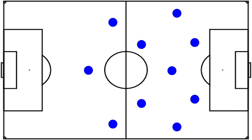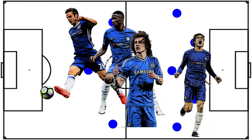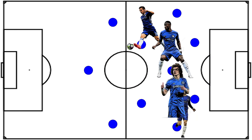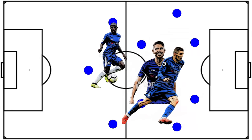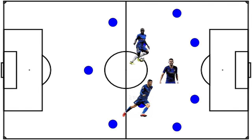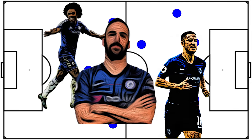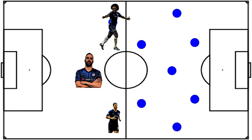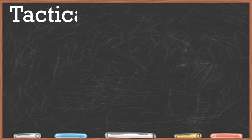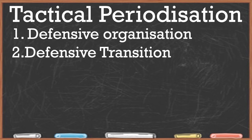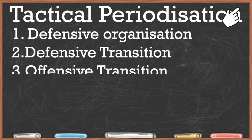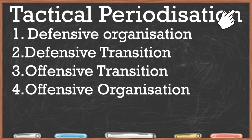Sarri stuck to his trusted 4-3-3. Azpilicueta, Rudiger, Luiz and Alonso made up the back four. Jorginho, Kante and Kovacic were the midfield trio, and Willian, Higuain and Eden Hazard completed the attack. Now let's take a look at the in-game tactics, focusing on the four main areas of tactical periodisation — a video explaining all of these terms is linked in the cards.